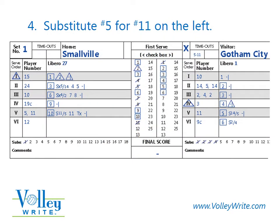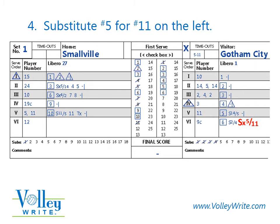To record the substitution on the left, scan the Player Numbers column to be sure that the player entering the court has not played in any other service position. If the substitution is legal, in the Current Server's Individual Scoring section, write the letter S followed by an X to indicate that the opponent is substituting, then the player number entering the court, followed by a slash, and the player number leaving the court. Update the player number column on the left side of the score sheet by placing a comma after the player number that left the court, then write in the player that entered the court. Cross off the next number in the substitution tally for the team on the left.